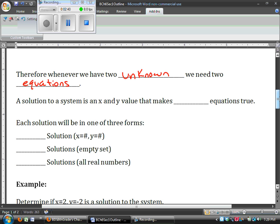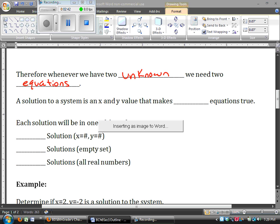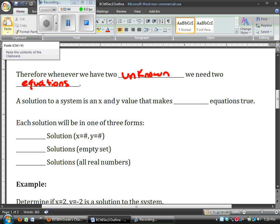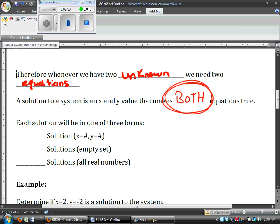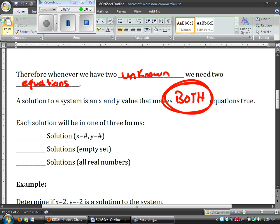A solution to these systems is an x and a y value, and it needs to make both equations true, not just one or the other. The x and y value have to make both equations true.